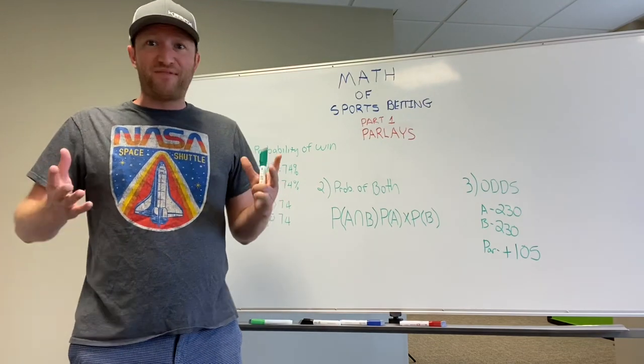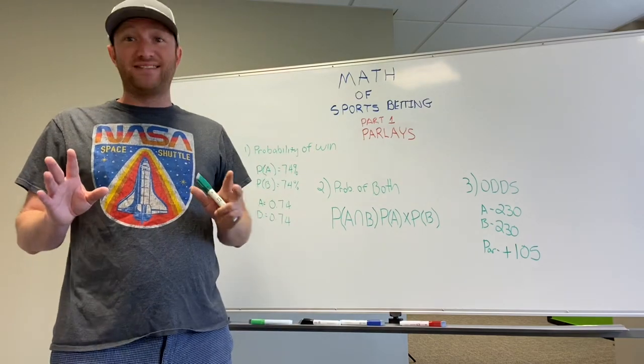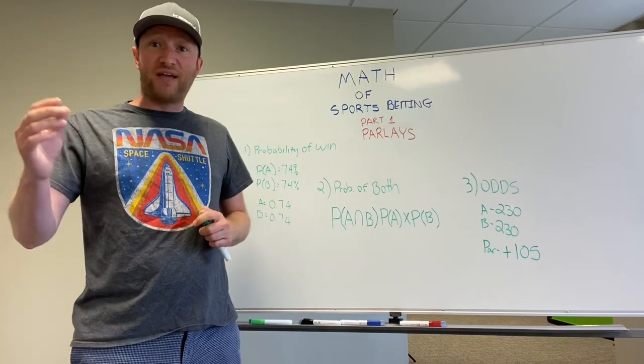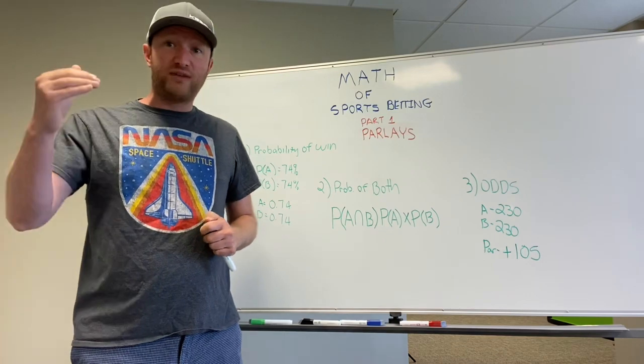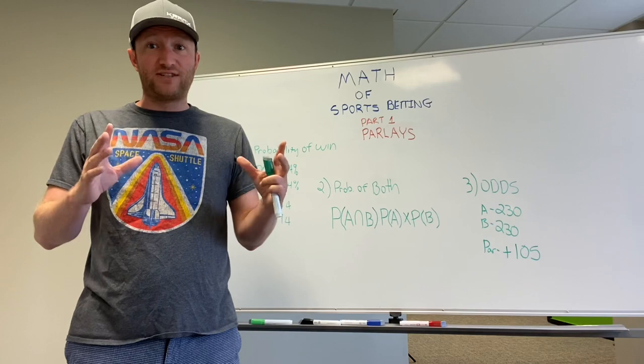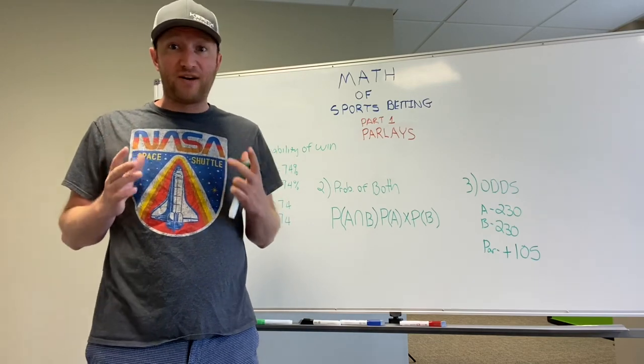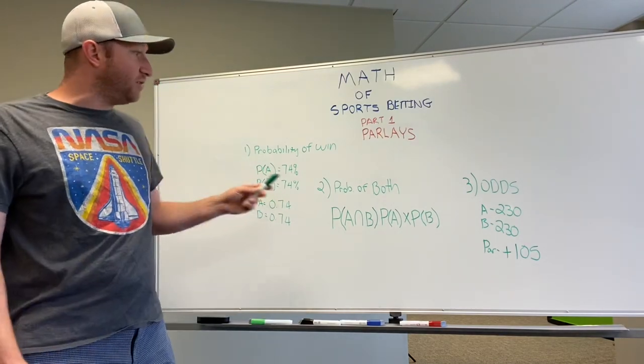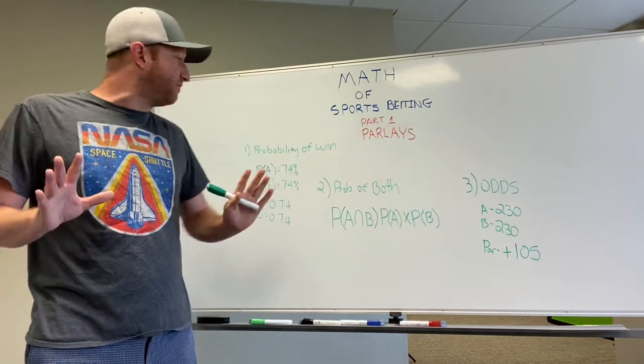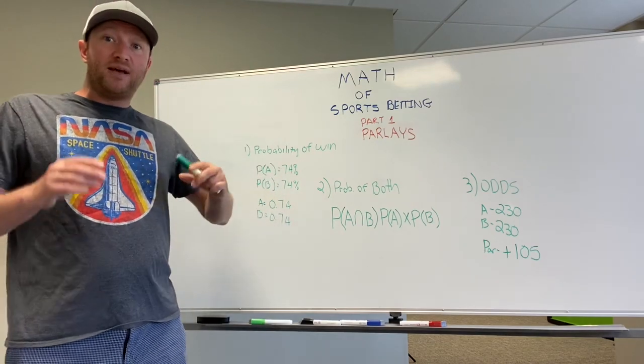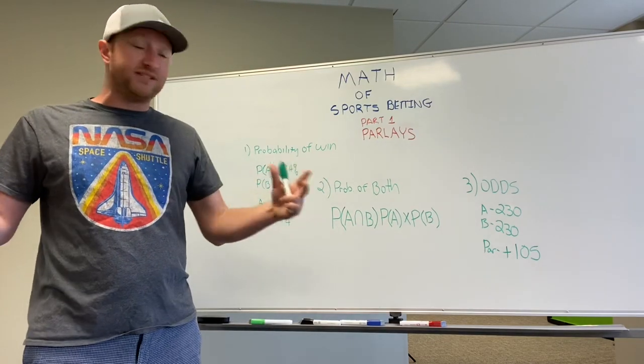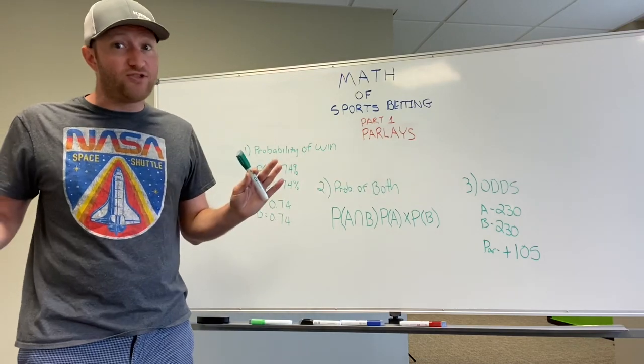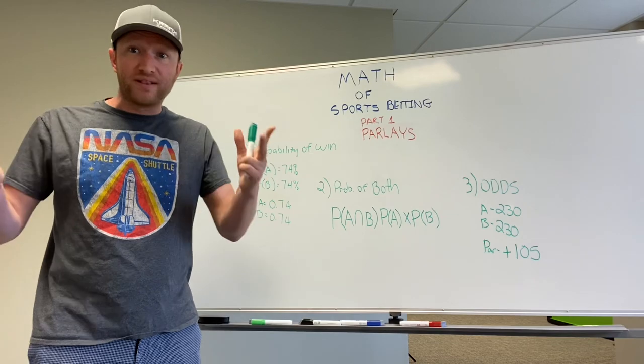First off, we want to figure out the probability of our two teams winning. In this particular game, we have two theoretical teams that we're going to parlay. They're both very large favorites. Team A is minus 230 and team B is minus 230. So they're two very big favorites in this particular game. Now, this is where our handicapping skills come into play. We have to determine of those two teams, what percentage of the time will these teams win? And that's always what we're doing as cappers.